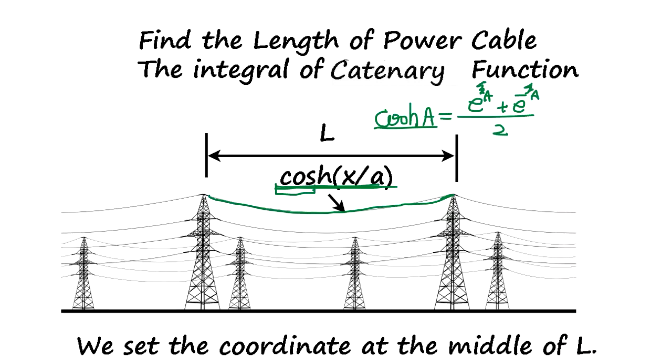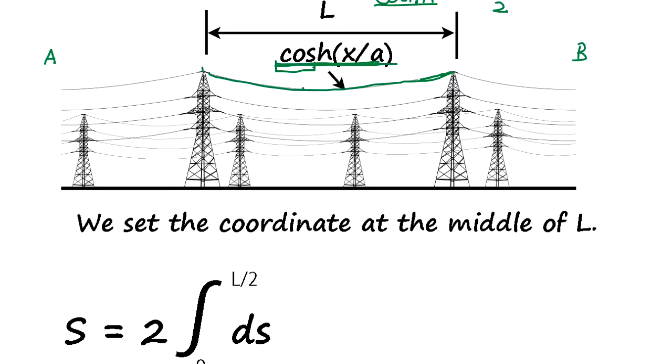And in the physics, we can prove that this curve is a catenary function. Now, integral challenge is to find out the lengths of this wire. So we know how much wire we need to route from point A to B, very far away. It's no straight line. Every section has some kind of extra length. So we set the coordinate at the middle of L.